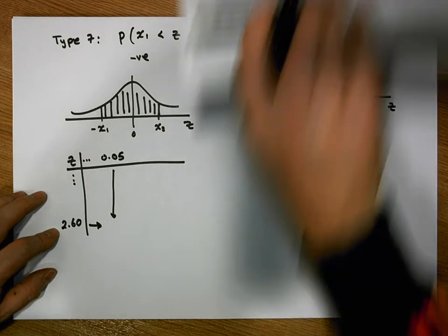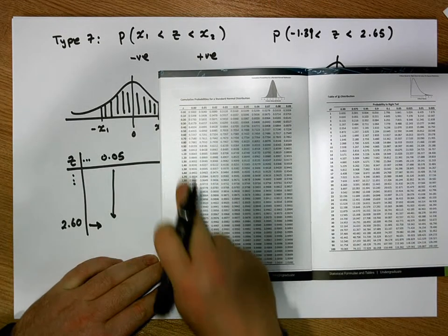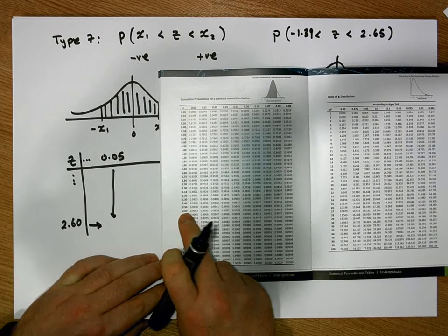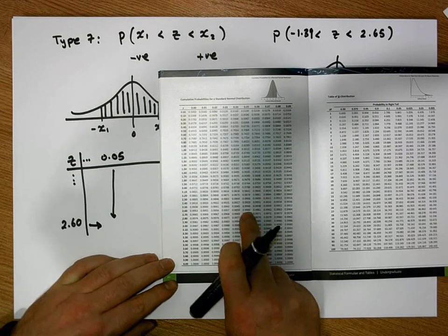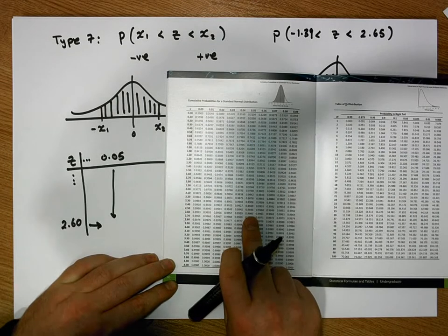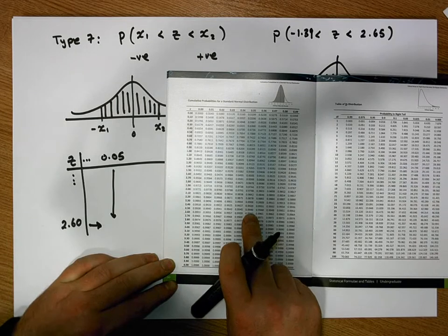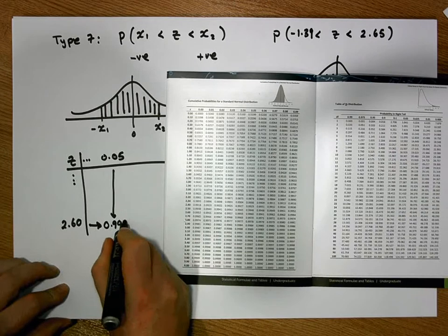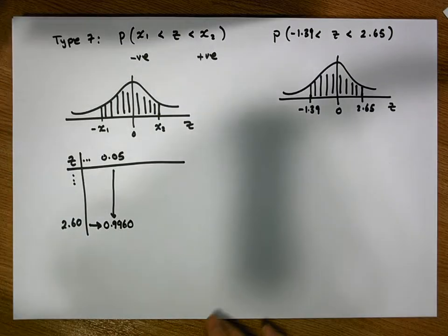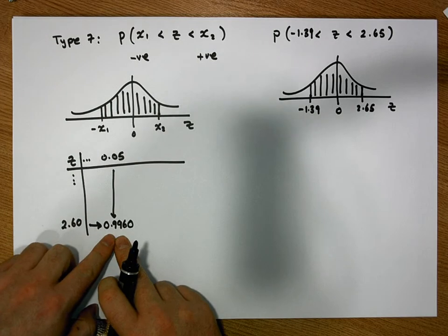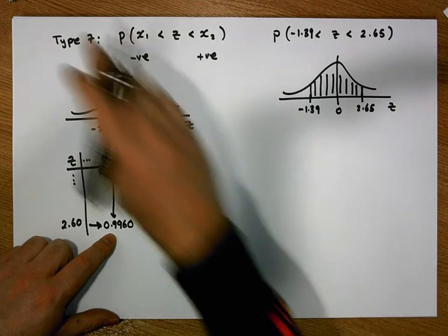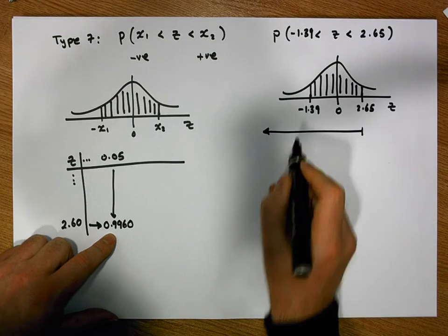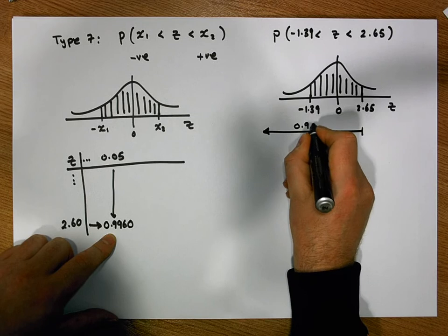We look up 2.65 on the tables: we come down to 2.6 in the first column and across to the column labelled 0.05, which gives us a value of 0.9960. This value of 0.9960 represents the area to the left-hand side of 2.65 — the area from 2.65 down to negative infinity.